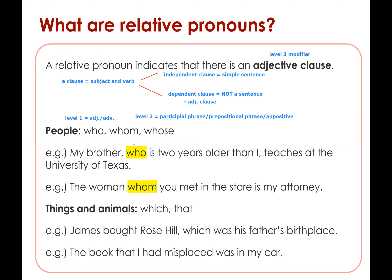We have five relative pronouns. If you are modifying people, you should use who, whom, and whose. There are some textbooks that say that would be acceptable in an essential adjective clause, but that is not formal. So for those who are taking the SAT exams, make sure you use who for people, or whom, or whose. And for things and animals, you can use which and that.